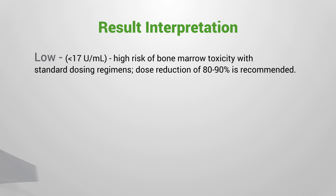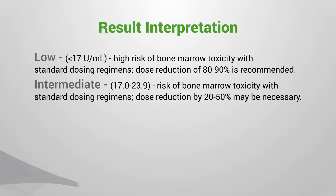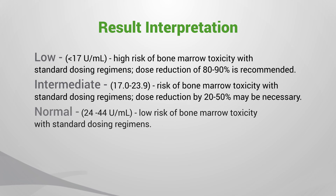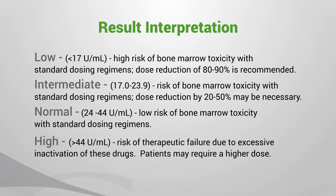Low enzyme activity has a range of less than 17 units per mL. Intermediate enzyme activity has a range between 17 to 23.9 units per mL. Normal enzyme activity has a range between 24 and 44 units per mL. Patients with enzyme activity greater than 44 units per mL are not at risk for toxicity.